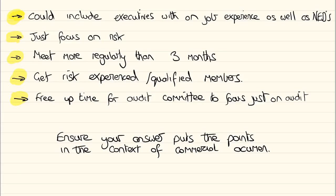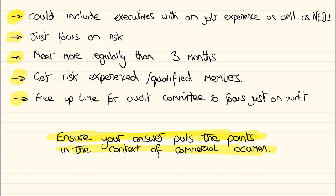Also, the audit committee could then just concentrate its efforts on audit and not be diluted by the needs of risk management. So there are five points. If we did the what and the why on each of those points, we could develop those into a good two-mark answer. The key thing is to make sure your answer puts the points in the context of commercial acumen — talking about how the risk committee might cost a little bit of money, but the benefits and money it could save might far outweigh those costs.